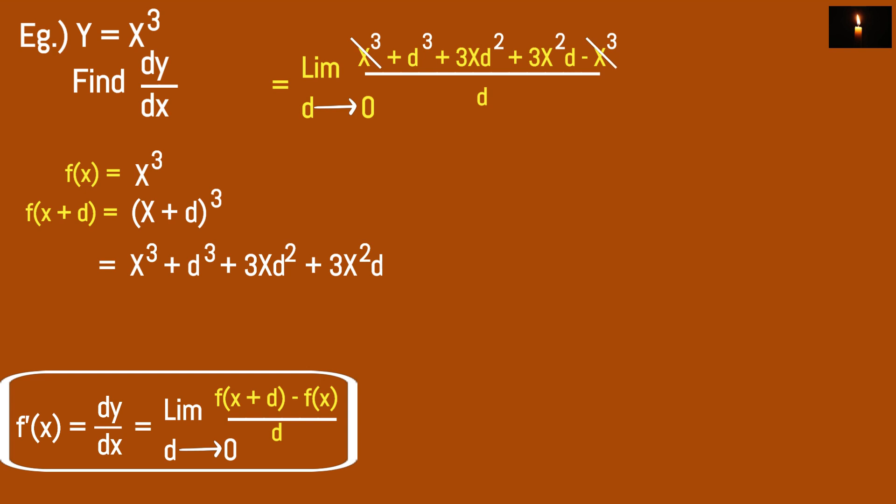After cancelling the d, we get 3x squared plus 3xd plus d squared. Taking the domain substitution where d equals 0, all terms with d disappear, leaving 3x squared.